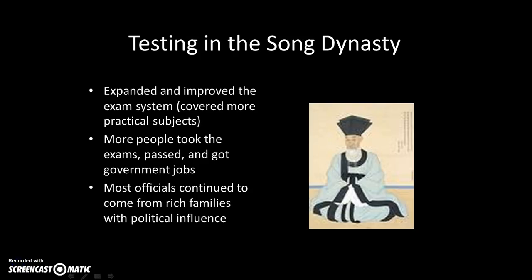The Song Dynasty used the civil service exam system from previous dynasties but made key improvements. They expanded it to cover more subjects — not just ethics and Confucian ideals, but things scholar officials would actually encounter as government employees. Because of that, many more people took the exam, passed it, and got government jobs. However, most officials still came from wealthy, politically influential families, since the preparation for the exam was quite expensive and somewhat prohibitive for peasants.